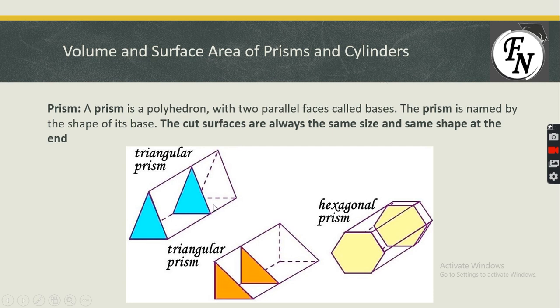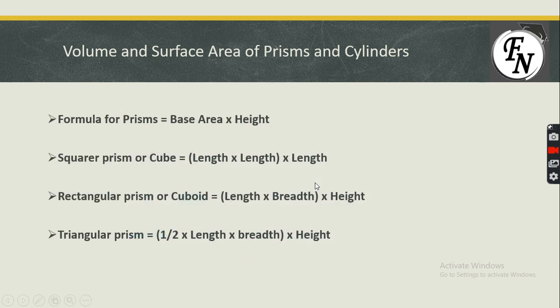When we discuss some questions, this will become clearer. Let's begin with the formulas. The formula for a prism is: Volume = Base Area × Height. This is the fundamental formula used for any volumetric figure.